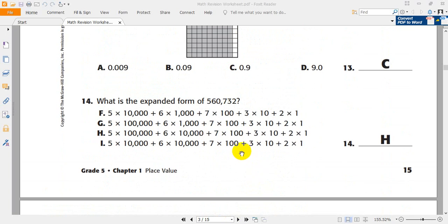The final question. What is the expanded form of 560,732? Again, 560,732. First of all, we have 2, plus 30, plus 700, plus 0, zero thousands, plus 60 thousands, plus 500 thousands.